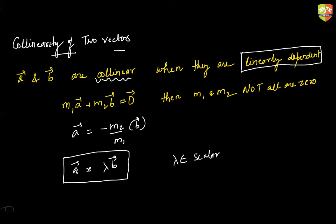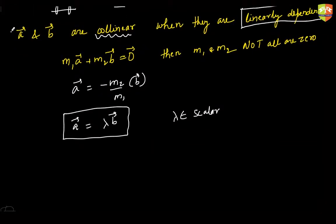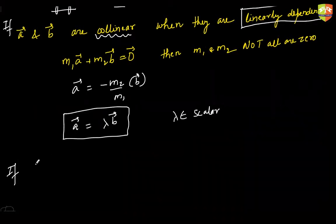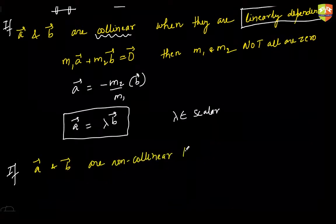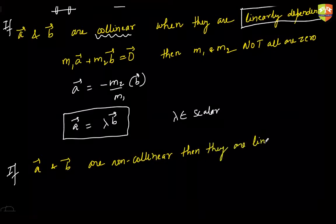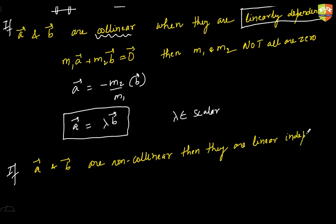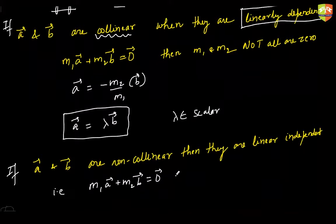Let me write the reverse case also. If a and b are non-collinear, then they are linearly independent. In other words, if you try to do m1·a plus m2·b equals null, it will only result in m1 and m2 both being zero.